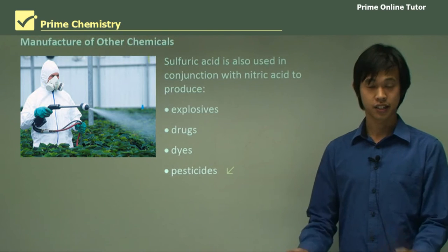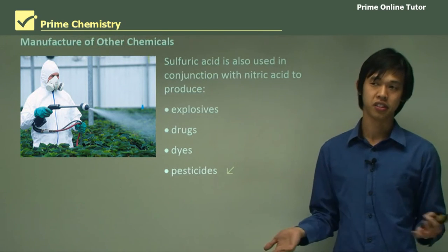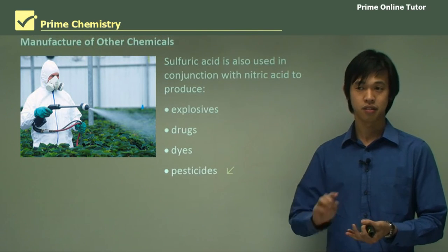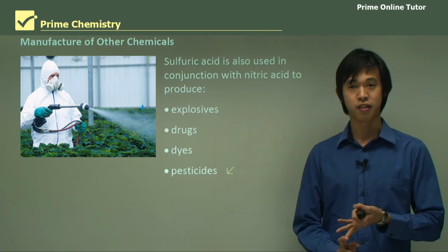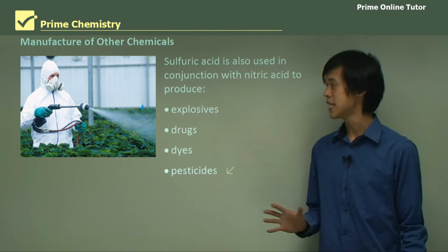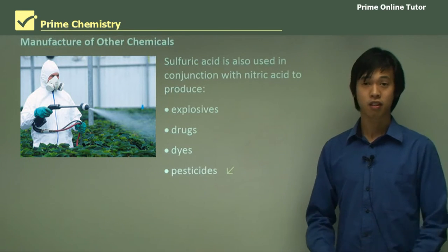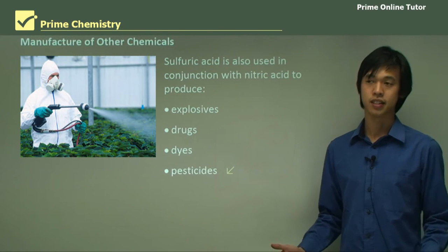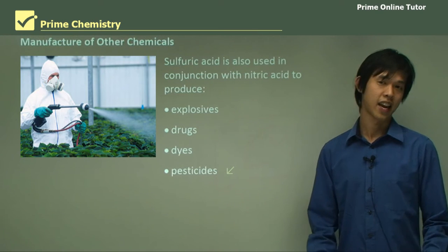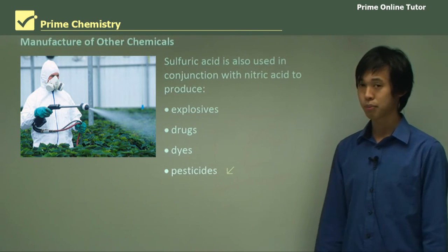That wraps up the uses of sulfuric acid. We've seen a multitude of uses — from ethanol production to lead acid cells, fabric manufacture, and fertilizer manufacturing. If you can remember maybe three of the main ones, then you're set for the HSC. Any three of those main uses will give you enough to answer any question on the uses of sulfuric acid.